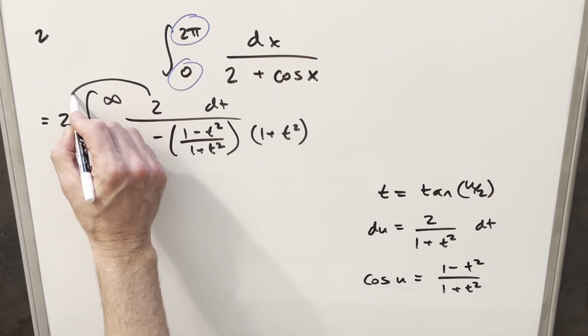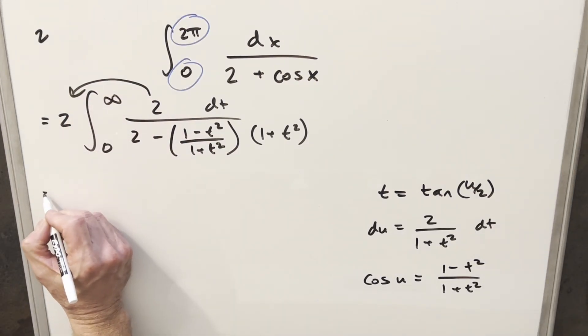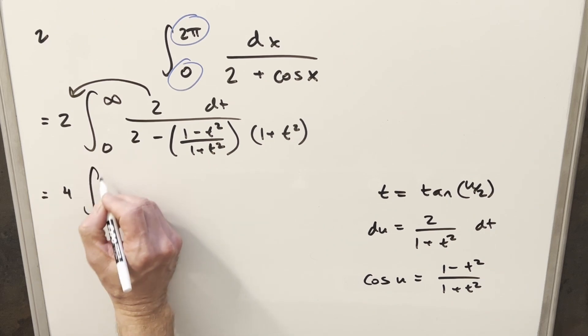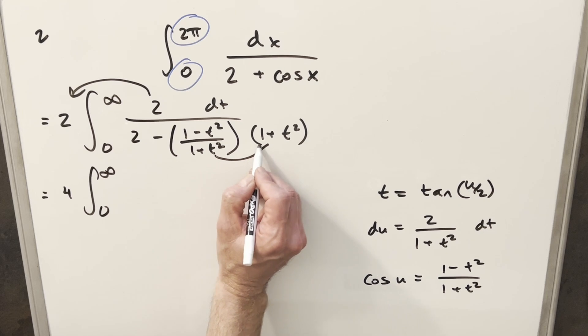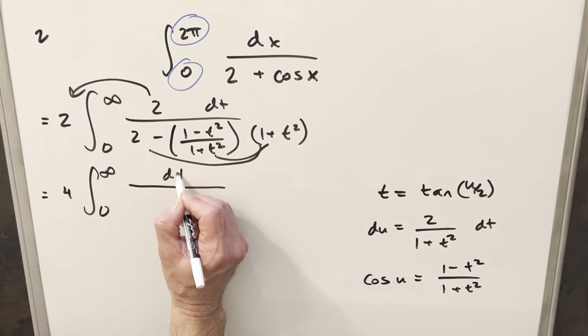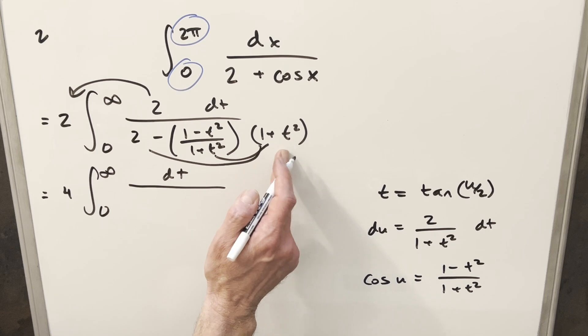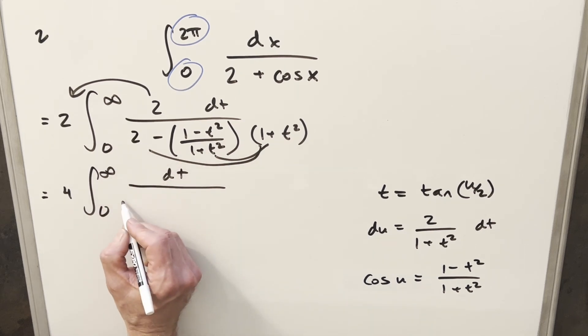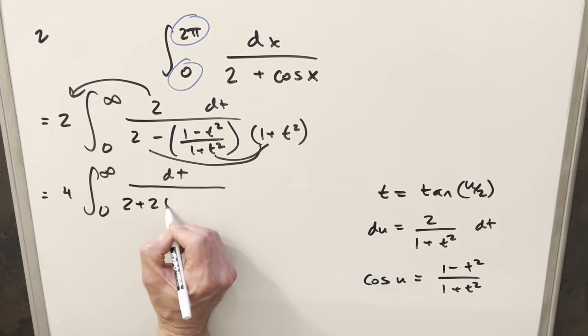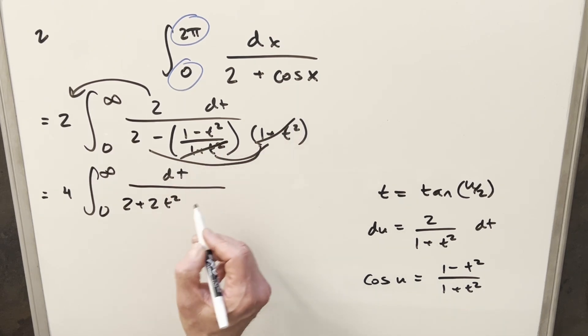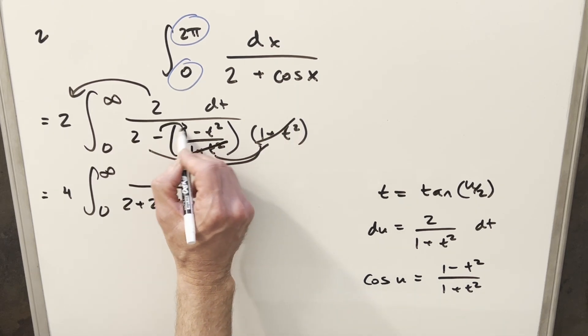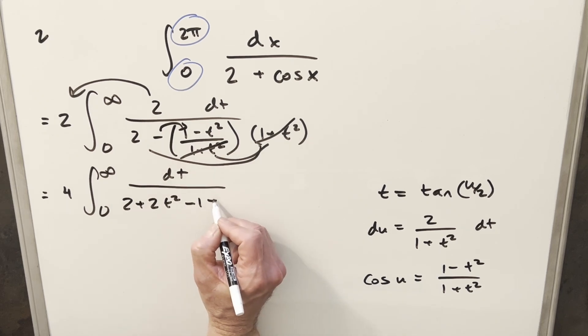Now from here, I'll just take this 2 and bring it out front. Multiply it times this 2. So I'm going to have 4 in front. And then I need to distribute this 1 plus t squared in here and to the 2. So let's see. We're going to have dt in the numerator. Distributing in 1 plus t squared times 2, that's going to give me 2 plus 2t squared. Then distributing here, this is going to essentially cancel with this. And we're going to end up by distributing the minus side. So this is going to be minus 1 plus t squared.